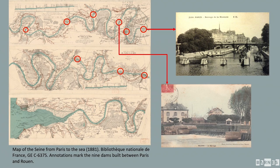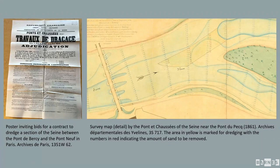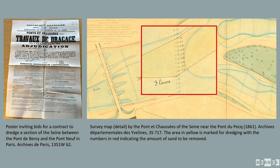Keeping the river navigable for commercial traffic required periodic campaigns of dredging. These projects were planned by the civil engineers of the Ponts et Chaussées — France's public works department — but were executed by qualified contractors who would compete for jobs at public meetings. A poster advertises one such meeting at which a contract to dredge a section of the river between two bridges in Paris would be awarded. A watercolor survey map shows a section of the Seine downstream from Paris near Port-Marly, where dredging was planned in the main navigation channel. Such maps provide a window into the precision with which engineers monitored the riverbed and the precision they expected from contractors, who in this case were ordered to remove mere fractions of a meter in certain spots.